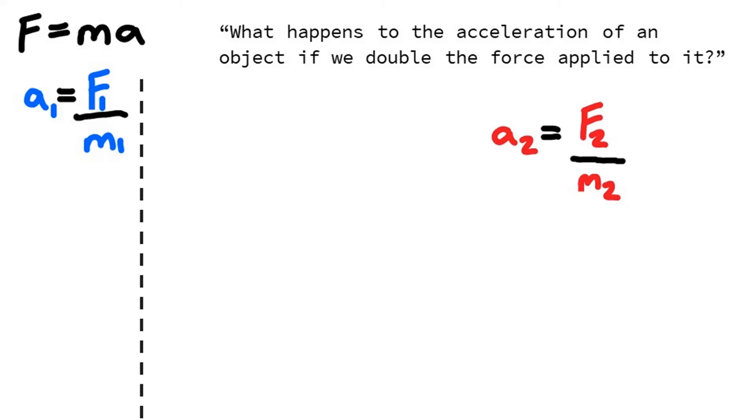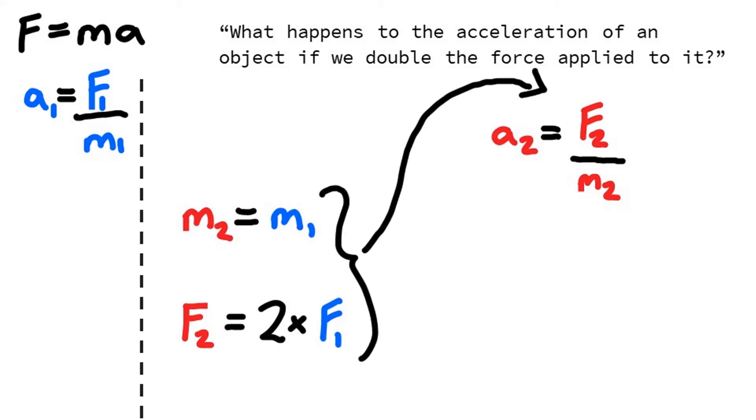So a2, the acceleration after something's changed in our situation, is equal to the new force divided by the new mass. Before we forget, the question implies that the mass itself remains unchanged. So m2 is equal to m1, but f2 is 2 times f1, because our question states that our force has doubled. With these two important bits of information written down, we can substitute them into our expression for a2, the new acceleration.